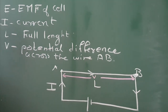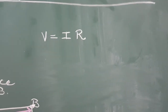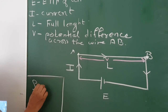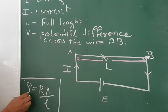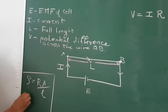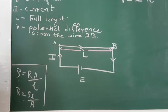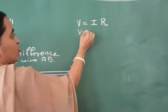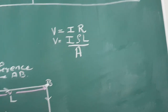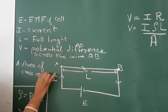Now applying Ohm's law, V is equal to I into R. In terms of specific resistance, rho is equal to R times A divided by L — that is the definition of specific resistance: resistance per unit length for unit cross-sectional area. So R equals rho L divided by A. Substituting, V equals I times rho times L divided by A, where A is the area of cross-section of the wire.